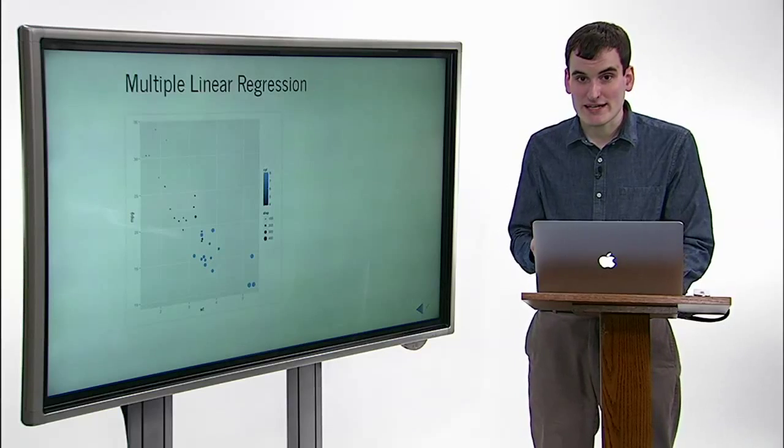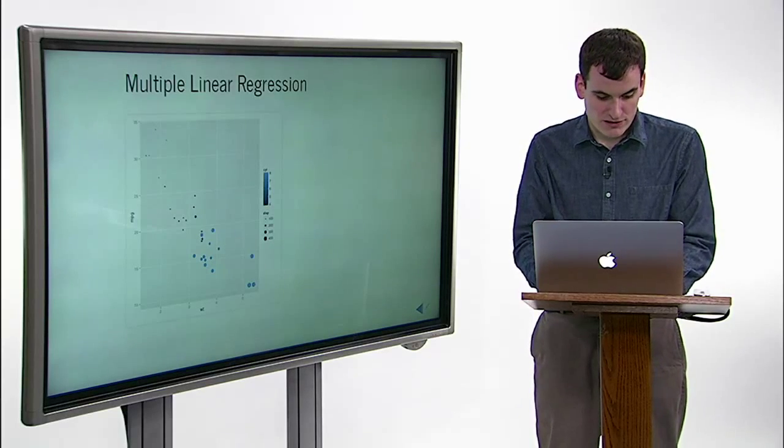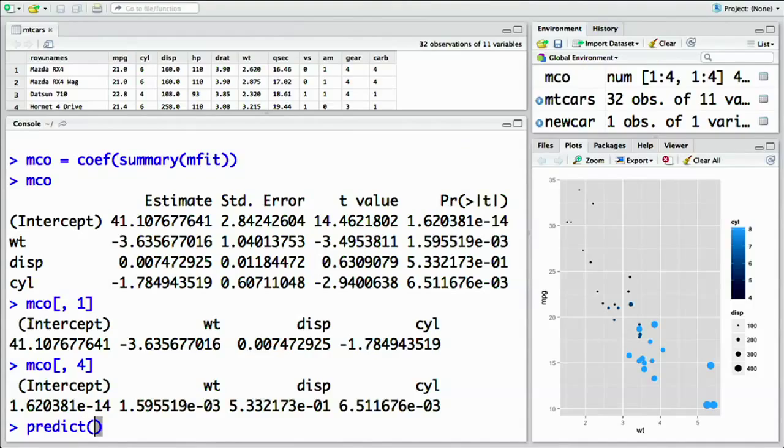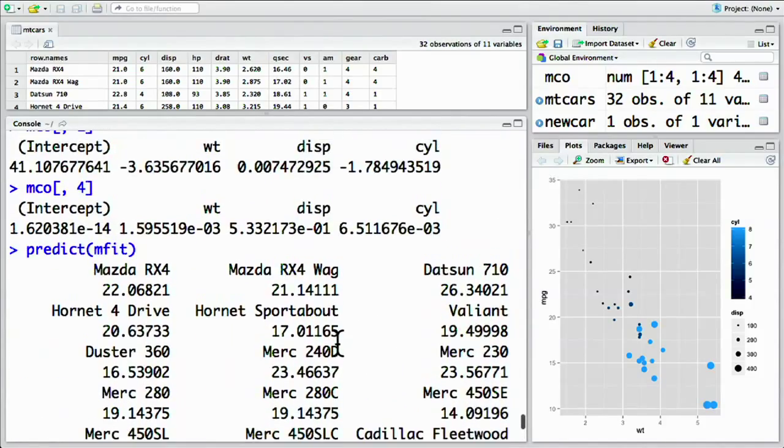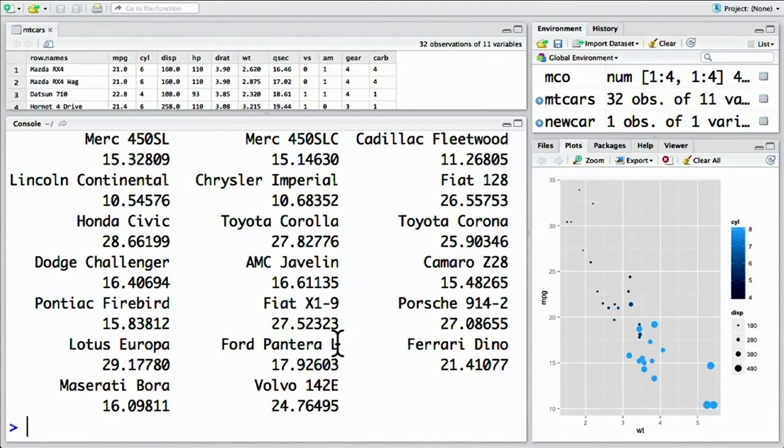We can also predict the gas mileage of each car based on this model. For instance, doing predict of mfit gives us our new predictions based on the model. Or we can do it for a new car. All we have to do is give it the values of weight, displacement, and number of cylinders that we're using as predictors. So in that case, we do newcar equals data.frame,